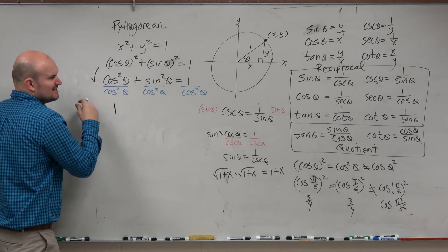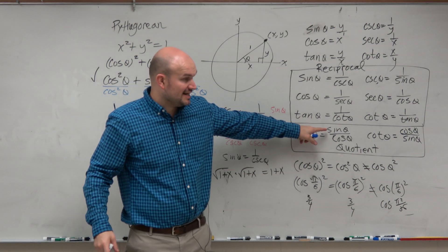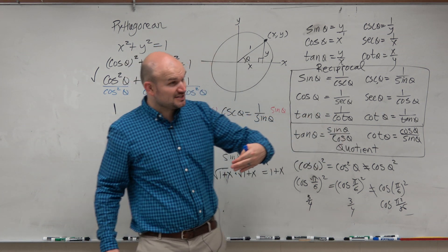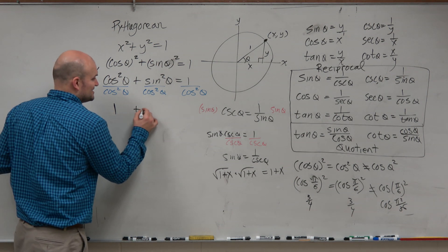Sine squared of theta over cosine squared of theta. Well, sine over cosine is tangent. So sine squared over cosine squared of theta would be tangent squared.